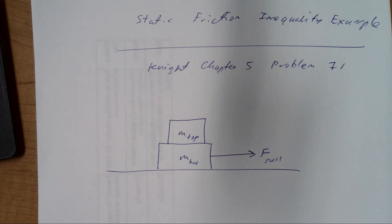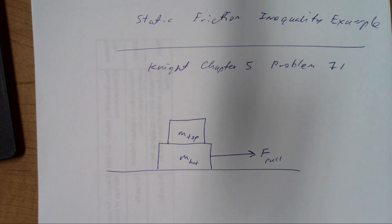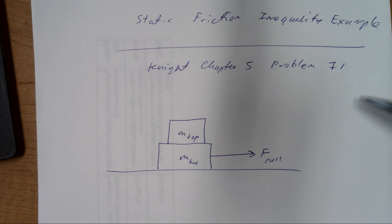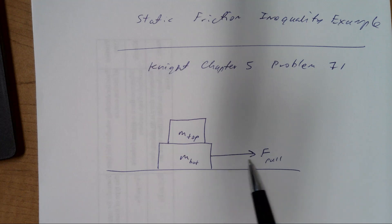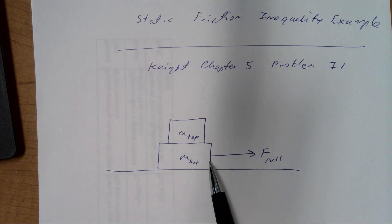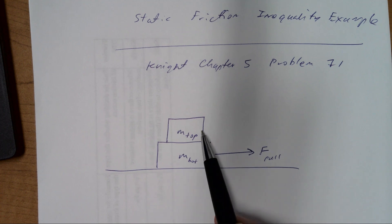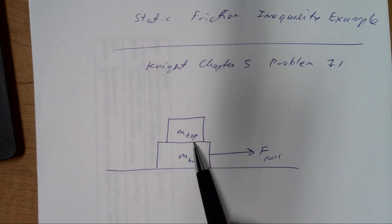I'm going to work an example of an inequality problem involving the static friction force. This problem can be found in the Knight textbook, Chapter 5, Problem 71. I've copied the diagram for that problem here. The goal of the problem is to find the maximum pulling force that can be applied to the box on the bottom so that the box on the top does not slide relative to the bottom block.